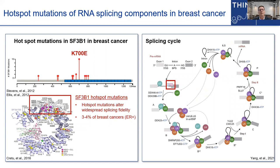If we zoom in on breast cancer specifically, two pivotal genome sequencing studies nearly a decade ago from Mike Stratton's team at the Sanger and Elaine Mardis and Matthew Ellis while they were at WashU — their teams independently discovered hotspot mutations in SF3B1, a core component of the U2 complex in the spliceosome. The spliceosome is a macromolecular machine that conducts splicing on nearly every intron of every mRNA in the transcriptome, and SF3B1 is a non-redundant, really core protein in this process. This exciting discovery provided strong genetic evidence that dysregulated splicing — perhaps global dysregulation — is selected for during the evolution of at least some breast cancers.